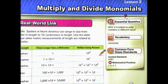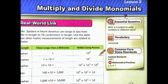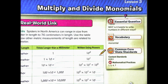Today we're going to begin Lesson 3: Multiply and Divide Monomials. If you'll notice to the right, we still have the same essential question as the last two sections: Why is it helpful to write numbers in different ways? We've learned to write numbers from fractions to decimals and vice versa, and we've learned to write numbers using exponents. Now we're going to learn to multiply and divide monomials. Your vocabulary word is monomial, and we're still on standard 8.EE.1, which is posted in the front of the room.